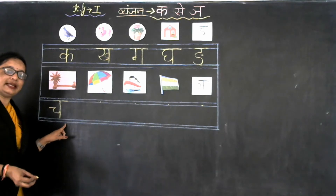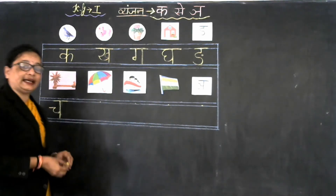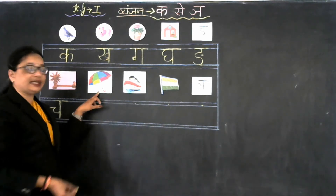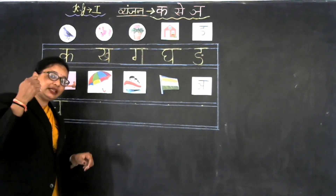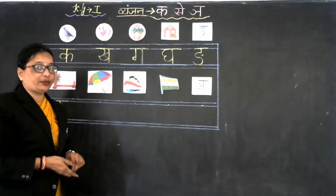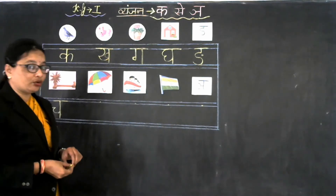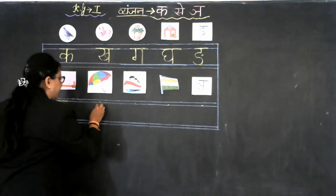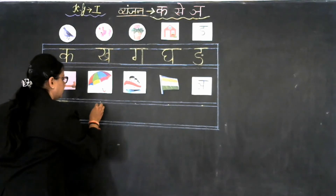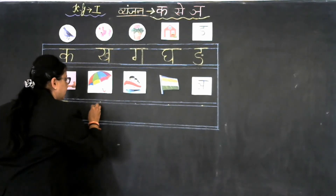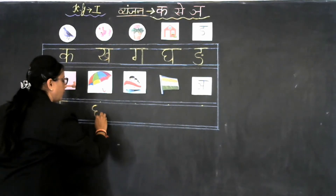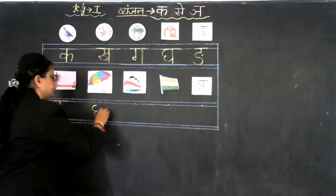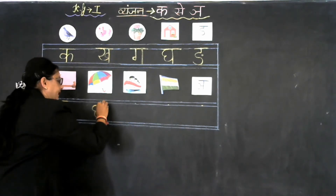Ch se chamach, ch se charkha. Now our next Vyanjan is Chha. Ch se chwarose kha. And what is the formation of Vyanjan Chha? Now look at the board. We make a reverse 3 like this, go up, and make a small circle like this, and slipping line on the top.